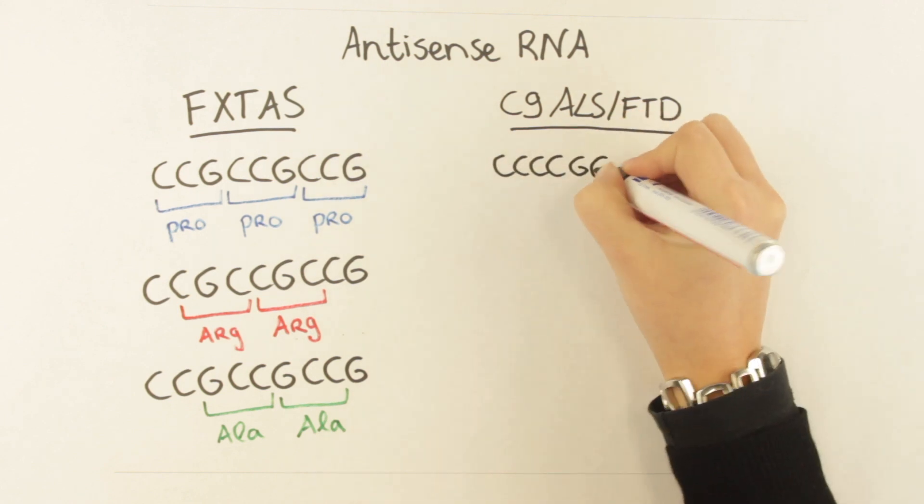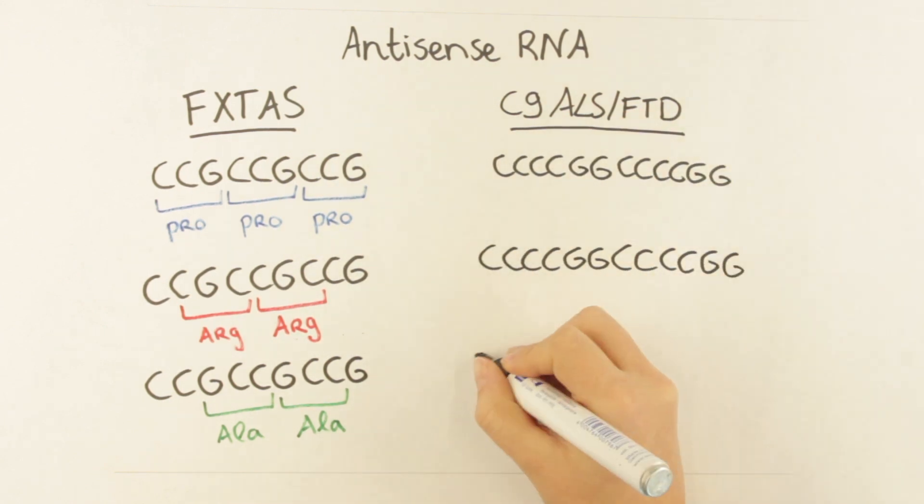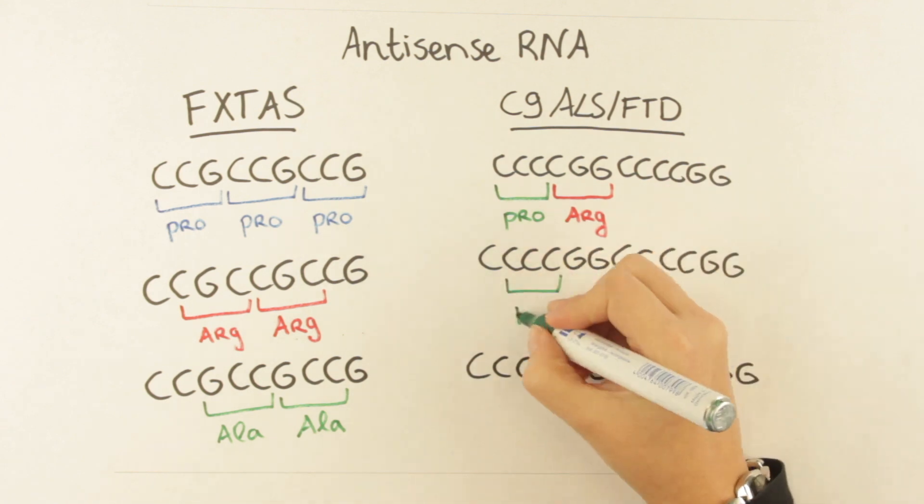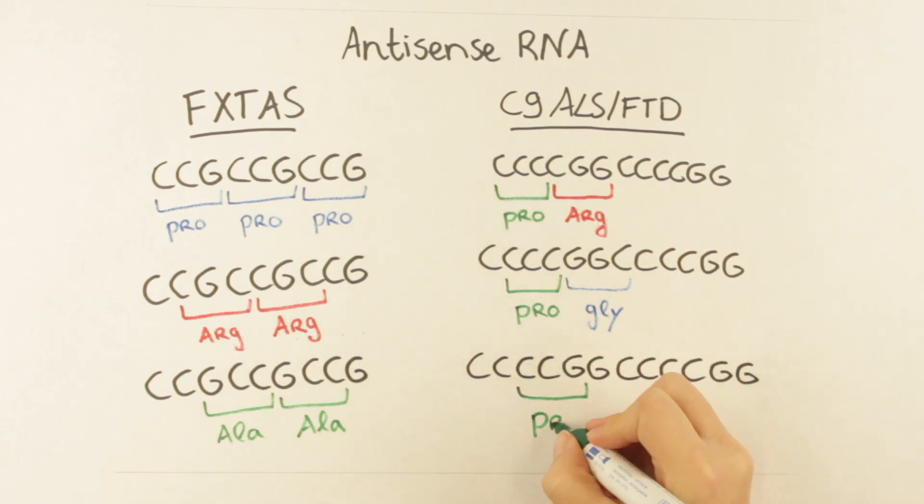For C9 ORF-ALS-FTD, RAN translation results in proline-arginine, proline-glycine, and proline-alanine.